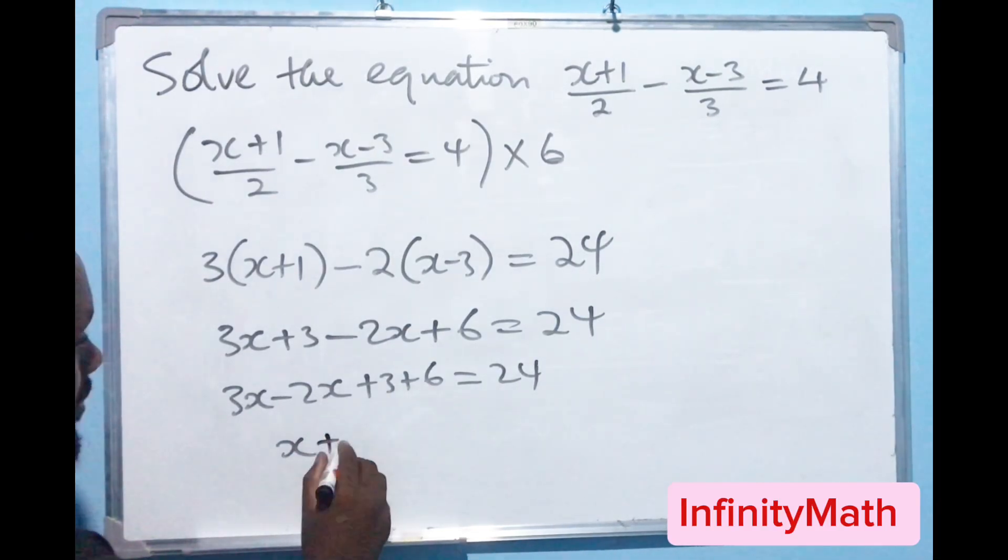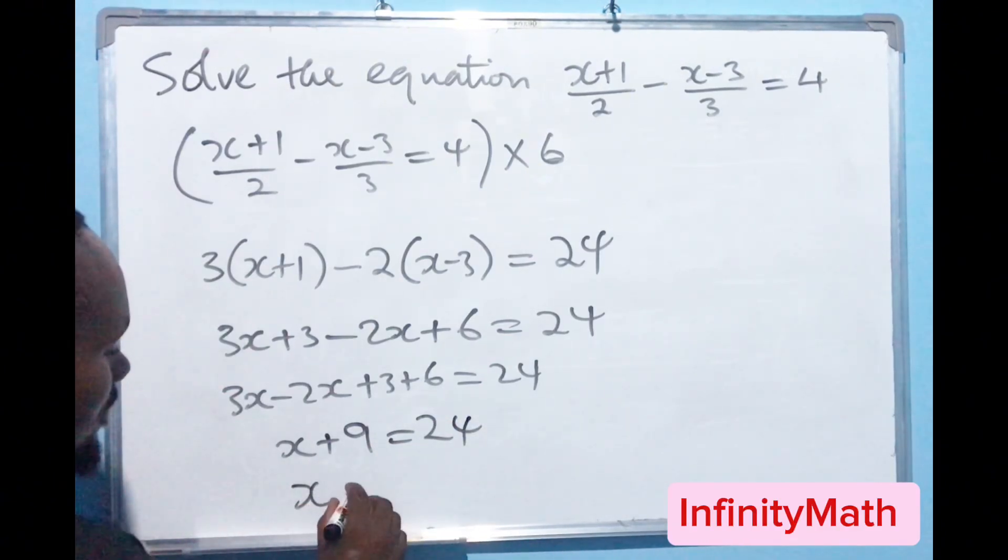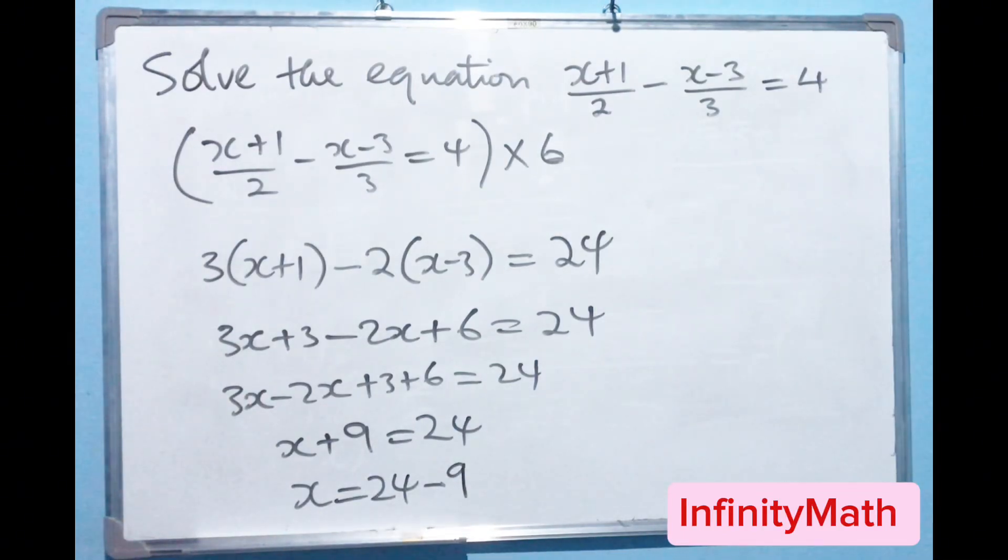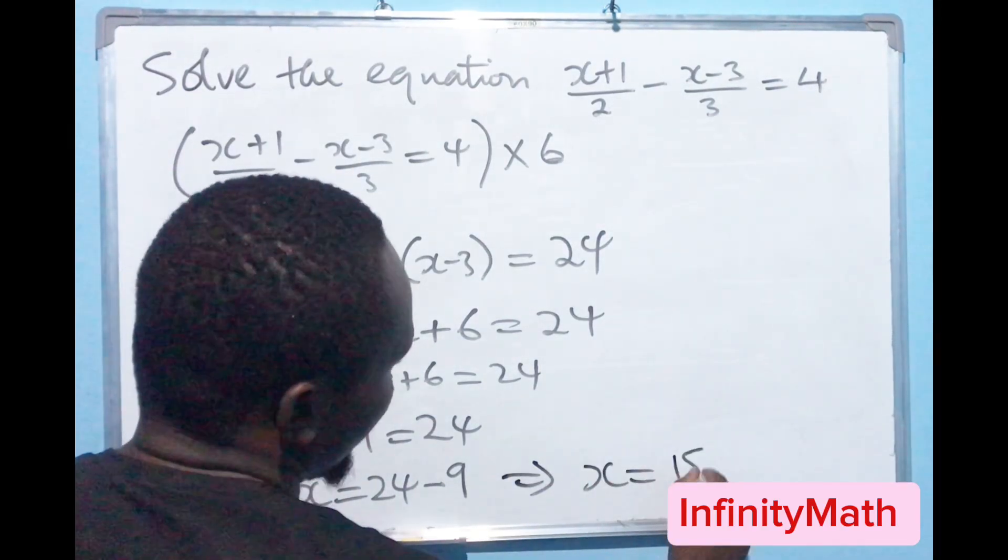So this here will give us x because 3x minus 2x will give us x, so plus here we get 9 that should equal to 24. So x will equal to 24 minus 9. So what is 24 minus 9? Let's find the answer. We know that the answer would be 15. So therefore this implies that x will equal to 15.